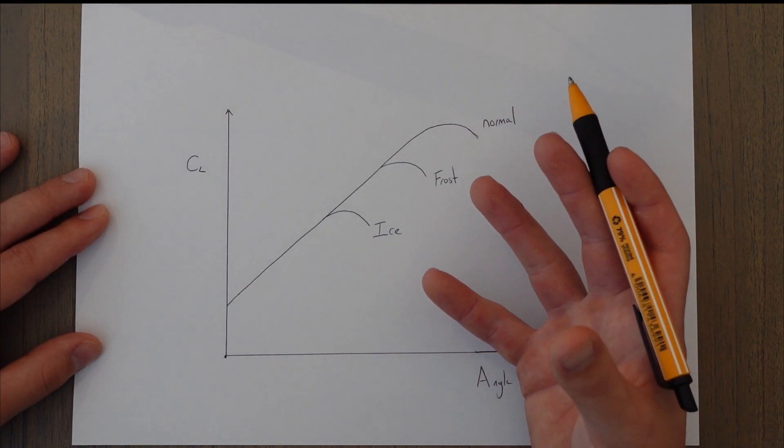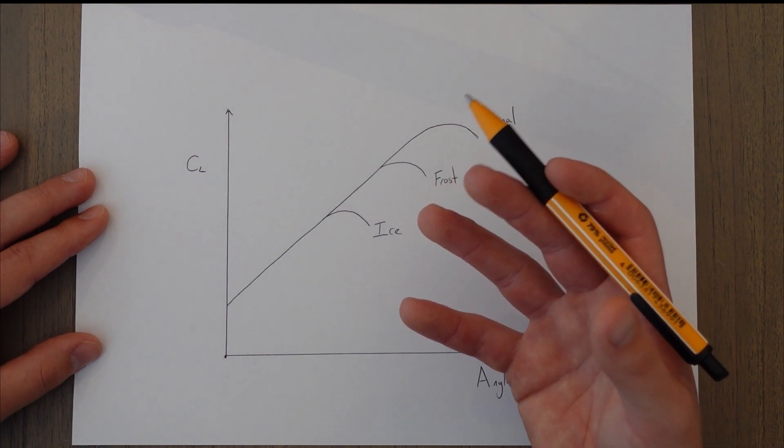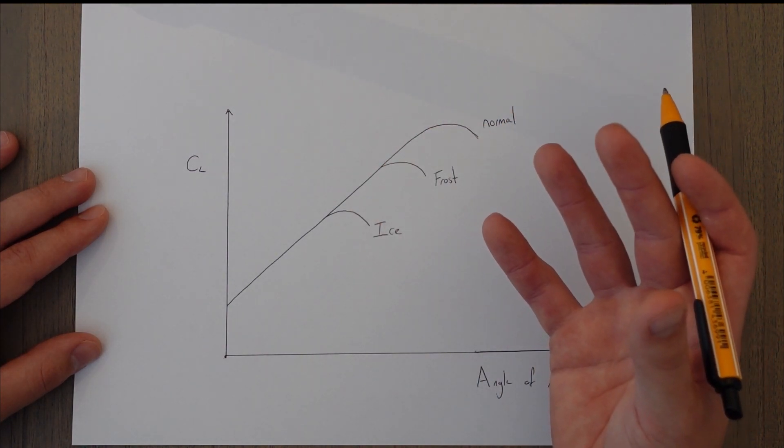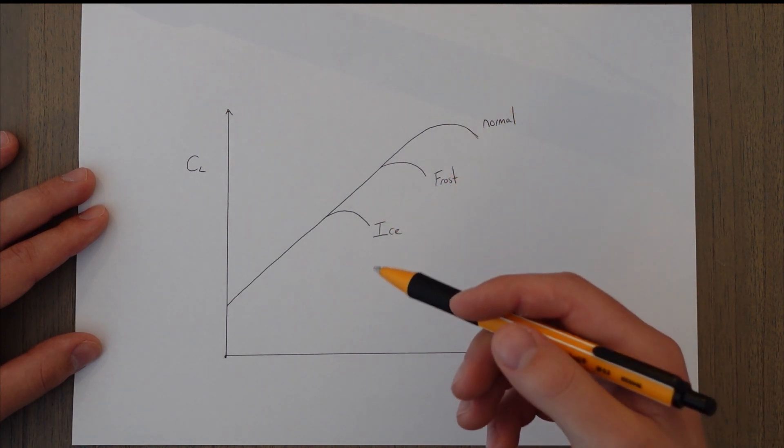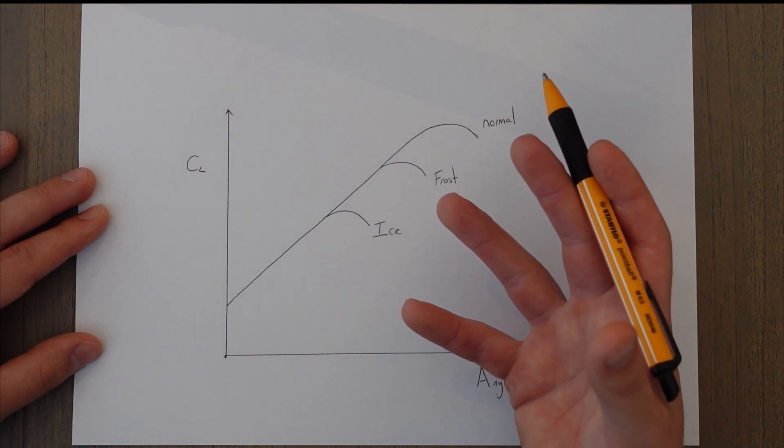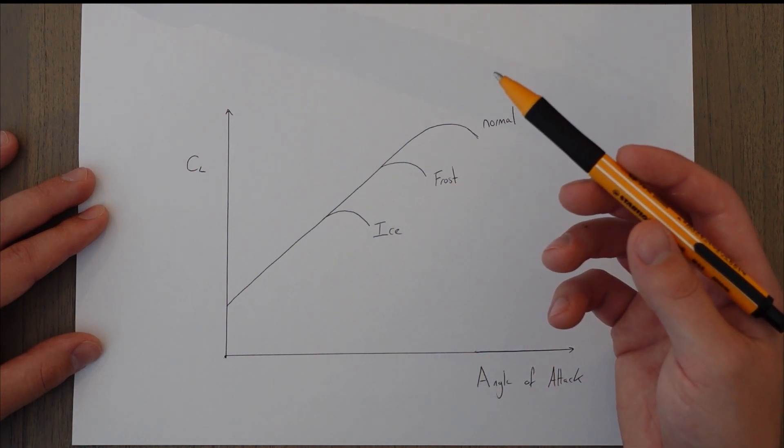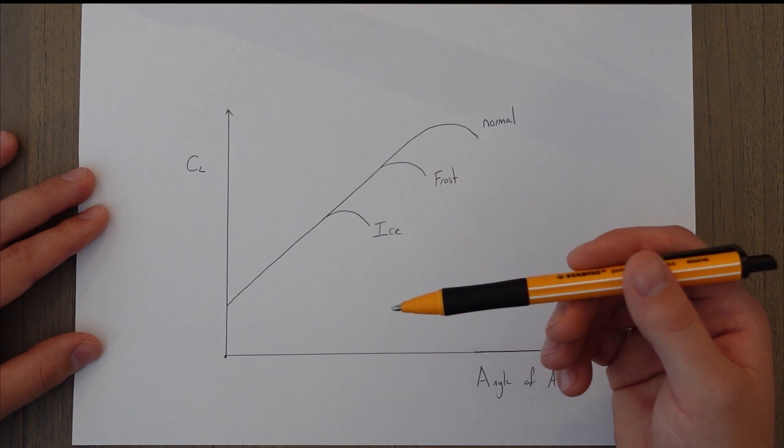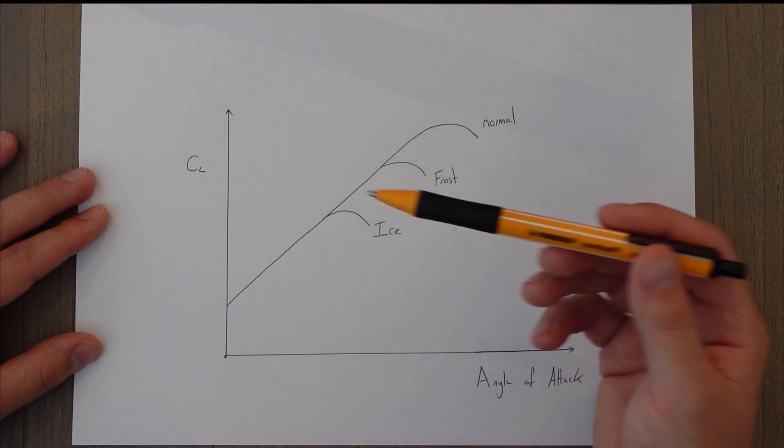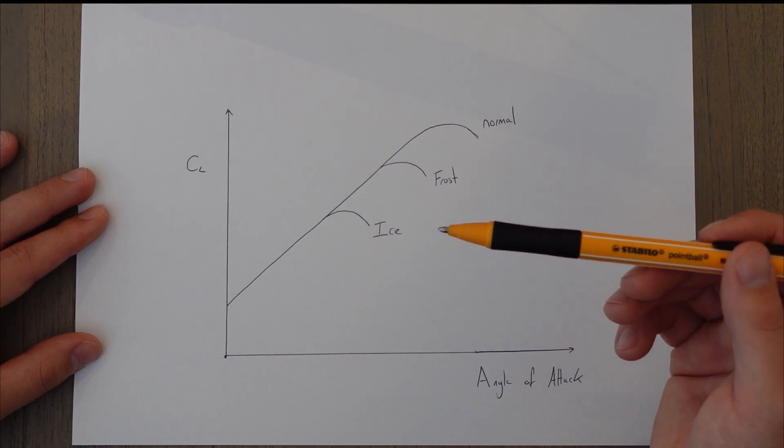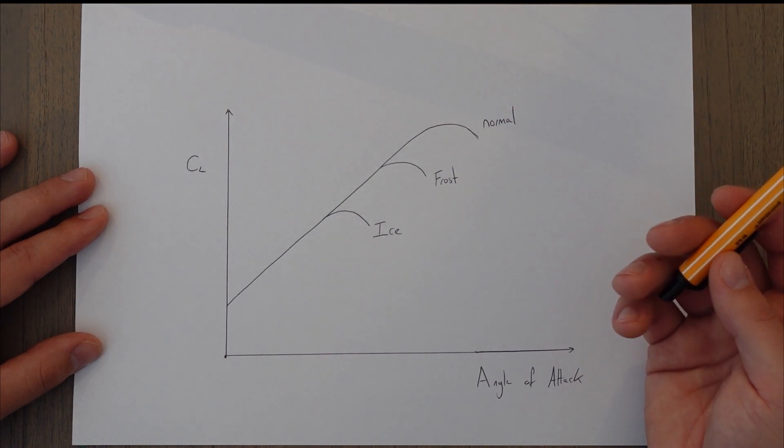When we have contamination we also have an increase in the skin friction drag and to some extent the form drag. This leads to a reduction in excess thrust available and if you remember from our flight physics class the excess thrust is what we'd use for our climbing performance. So if you're using more thrust to overcome the drag that means you have less excess thrust and you have a reduced amount of climb performance.